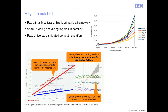Let's start with an overview on Ray. In a nutshell, Ray is primarily a library whereas Spark is primarily a framework. Spark is more about slicing and dicing data whereas Ray is a universal distributed computing platform. On the top right you see that Ray is always faster than Spark and Dask.